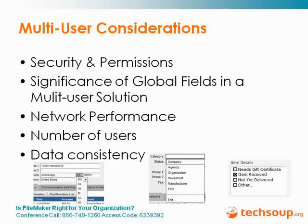One of the benefits of a multi-user solution in FileMaker is data consistency. Being able to have a drop-down set up with all of the states so you don't have to worry about someone using the wrong abbreviations, having specific category or subcategory items laid out exactly, and having radio buttons or check boxes — the data goes into the database exactly as it is entered, and you don't have to worry about misspellings or someone doing things you didn't expect.